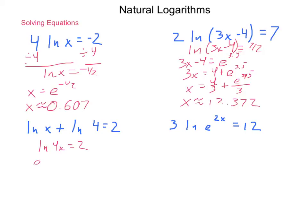E squared equals 4X. Using reflexive property, we'll have X equals E squared over 4. So, X is approximately equal to the value of 1.847.